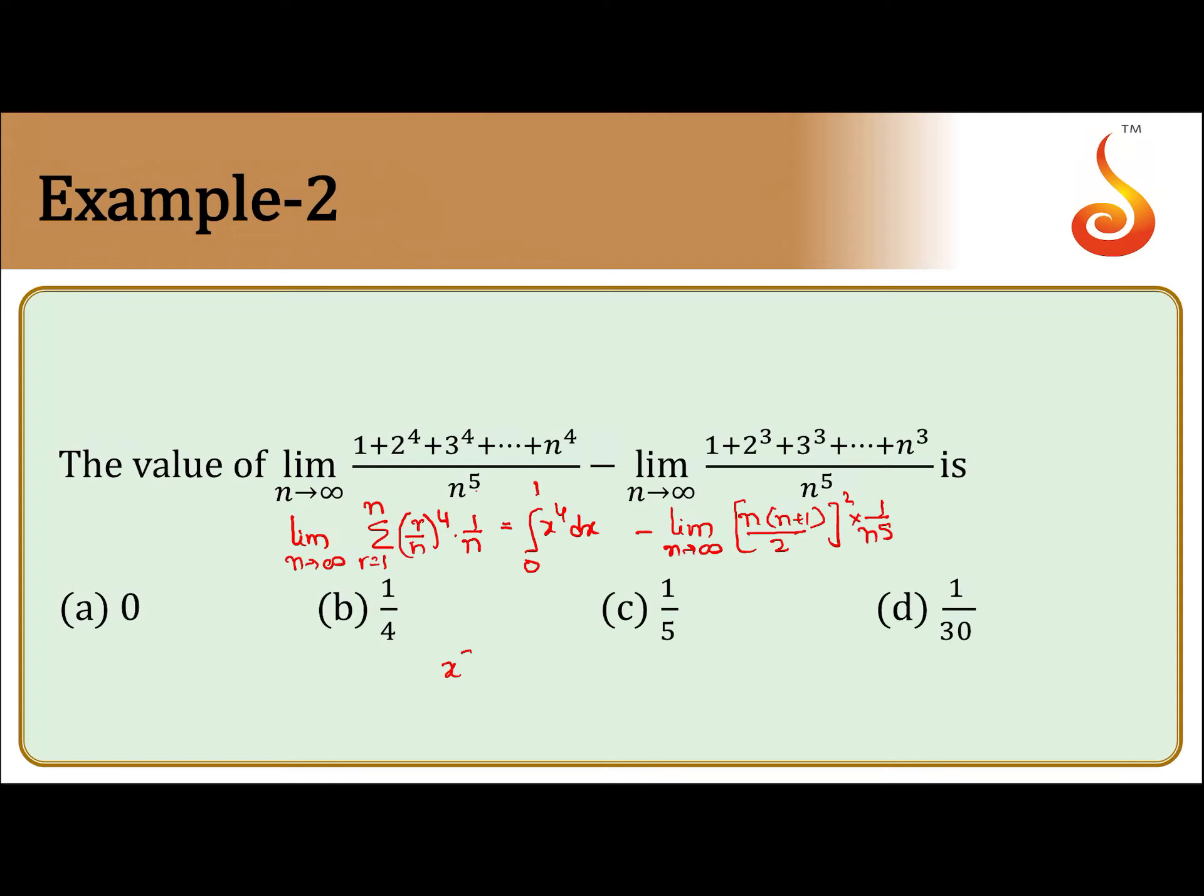So what we get? This one is x to the power 5 by 5, 0 to 1, minus limit n tending to infinity, we get 1 plus 1 by n whole square by 4 into 1 by n. As n tending to infinity, 1 by n tending to 0.